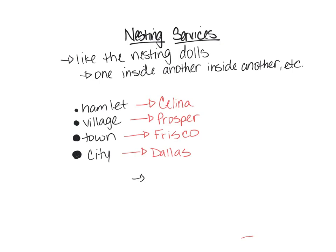Nesting services are really an MDC phenomenon. In LDCs and NICs, suburbs don't develop the same way — if you need something, you go into the city. In MDCs, especially places like Texas where people are willing to drive, services spread outward in these nested patterns. So nesting services mostly apply to MDCs.